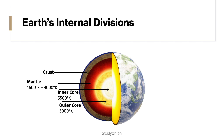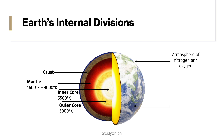Moving on to talk a little bit more about the atmosphere. The Earth also beholds a rich atmosphere of nitrogen and oxygen, and most of the Earth's surface is actually covered by oceans of seawater.